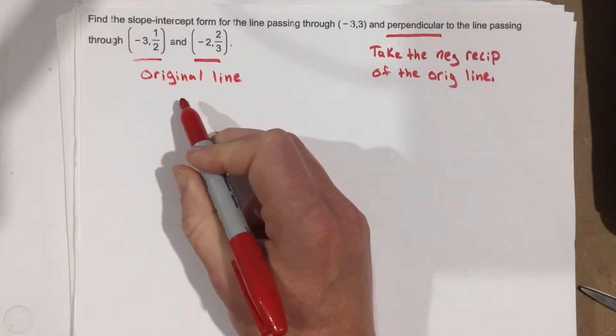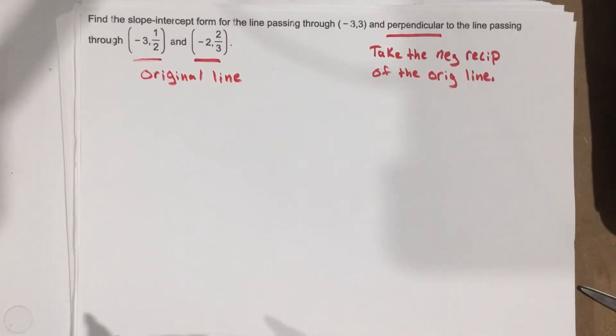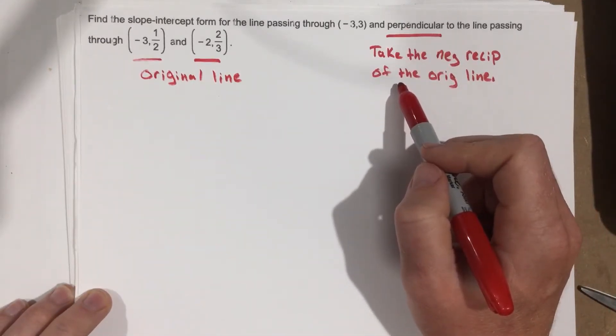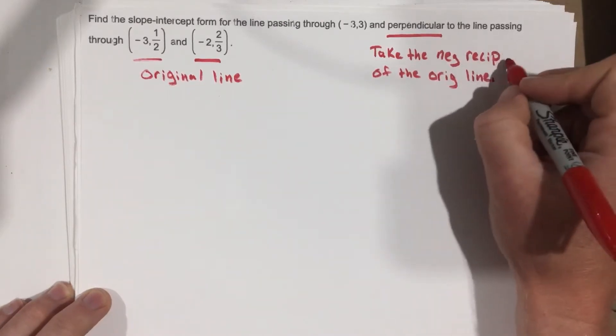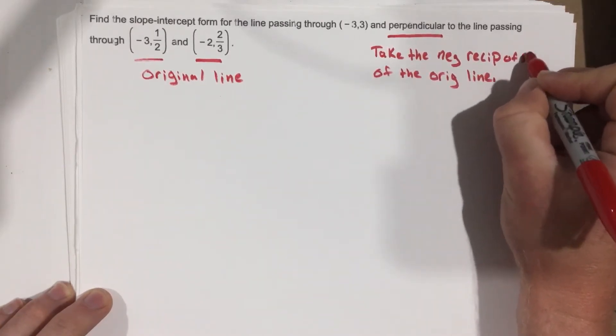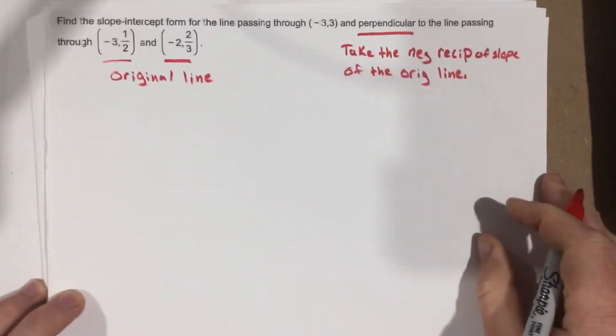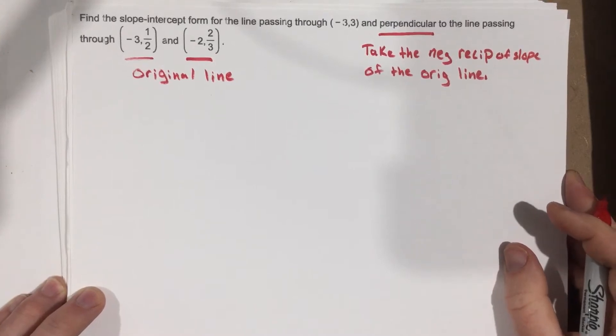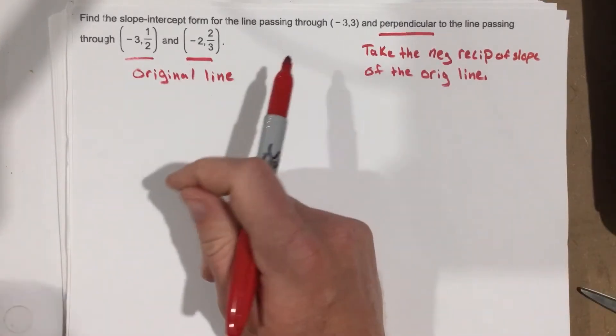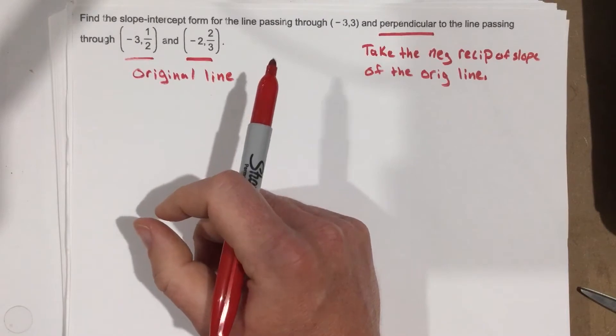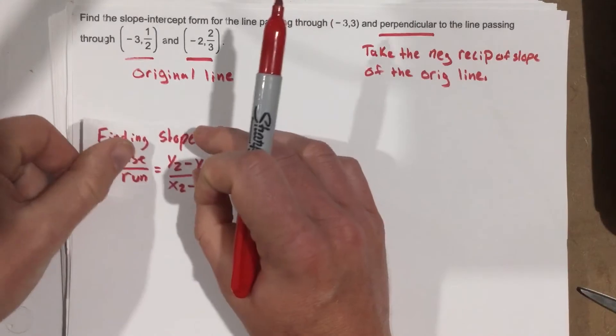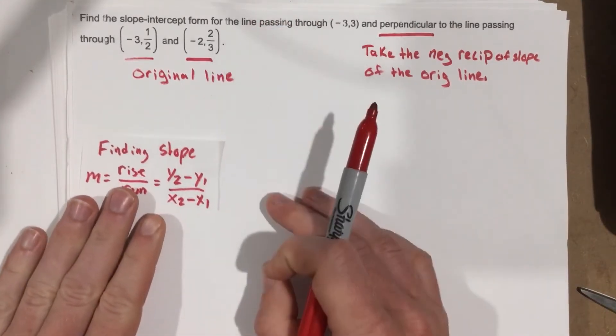So because that's the original line, I need to find its slope. I don't have to find the whole equation, just the slope, because all I need to write a perpendicular line is to take the negative reciprocal of the slope of the original line. So I just need to take the slope that I find from the original line and use the negative reciprocal of that slope to find the perpendicular line.